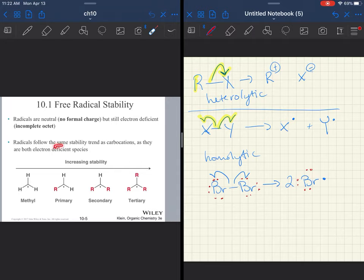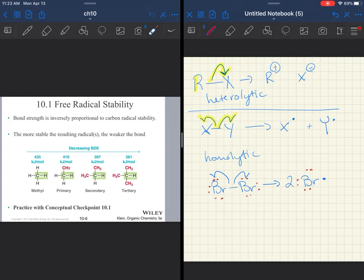The radical has got a little bit of a different behavior than the cations and anions we've seen, but kind of somewhere in the middle. The cation, if you recall, is flat, so that's why with SN1 and E1 reactions, you got racemization, because a nucleophile could attack from either side.